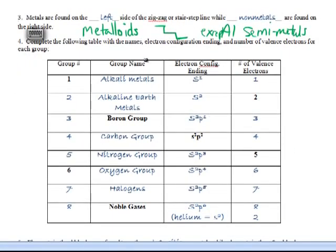Now it says complete the following table with names, electron configuration ending, and number of valence electrons. You should be able to look in your notes for these names. Basically, you have to memorize alkali and alkaline earth metals, group one and two. And then these guys are easy. Whatever's at the top of the group there, that's the name of the group. So boron, carbon group, nitrogen group, oxygen. And then you've got to memorize halogens, and hopefully by now you know noble gases.